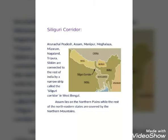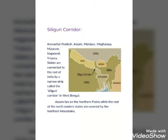Now we learn a new term: the Siliguri Corridor. Look at the map — you can see surrounding countries: Nepal, China, Bhutan, Bangladesh, and Myanmar. There is an arrow on the map indicating the Siliguri Corridor. Arunachal Pradesh, Assam, Manipur, Meghalaya, Mizoram, Nagaland, Tripura, and Sikkim are all connected to the rest of India by a narrow strip in West Bengal, called the Siliguri Corridor.